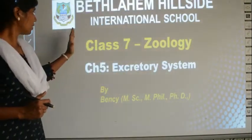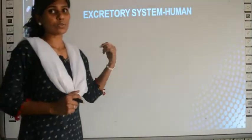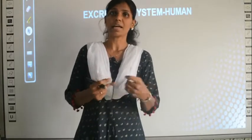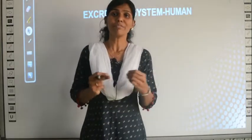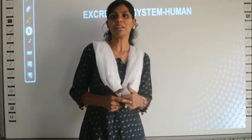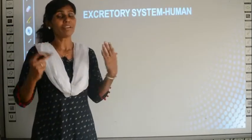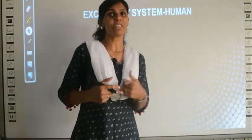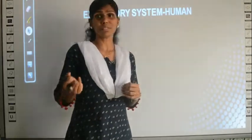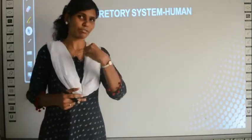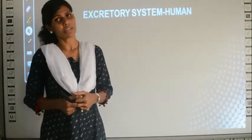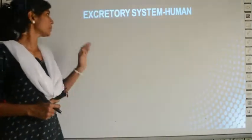Every living organism has an excretory system, whether it is a small insect, an ant, a very big whale, or a human being. In your Class 7 book, however, you will only learn about the human excretory system. Excretory systems differ from organism to organism — some small animals have just one pore through which they take food and give out waste, but in humans we take food through the mouth and pass waste through the anus.